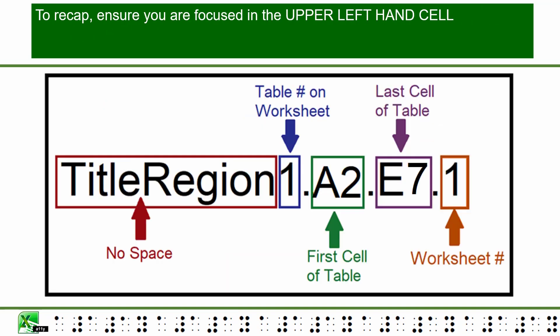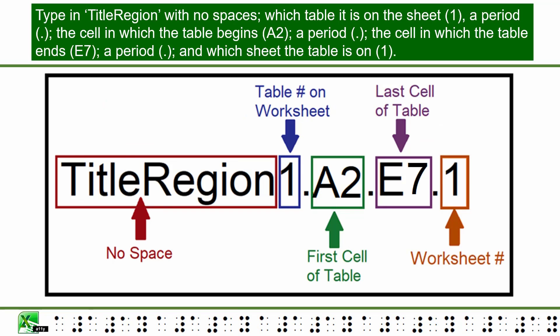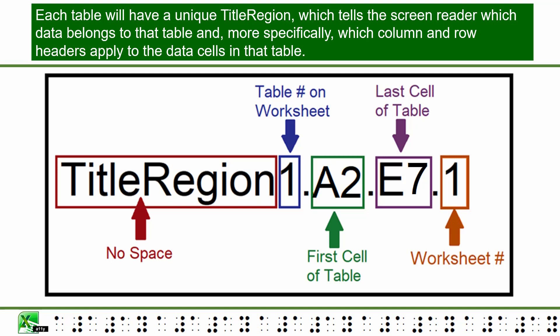To recap: ensure you are focused in the upper-left cell, then type 'TitleRegion' with no spaces, followed by which table it is on the sheet (1), a period, the cell where the table begins (A2), a period, the cell where the table ends (E7), a period, and which sheet the table is on (1). Each table will have a unique title region that tells the screen reader which data belongs to that table and which column and row headers apply to each data cell.